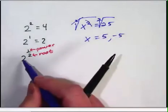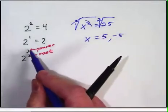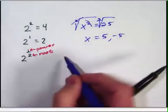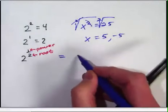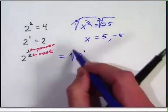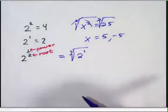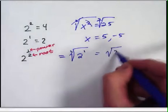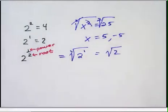So if you have 2 to the 1 half power, the top number is the power, the bottom number is the root. So what this translates into is it's 2 to the first power, take the second root. Basically what that means is it's the square root of 2. A 1 half power is our square roots.